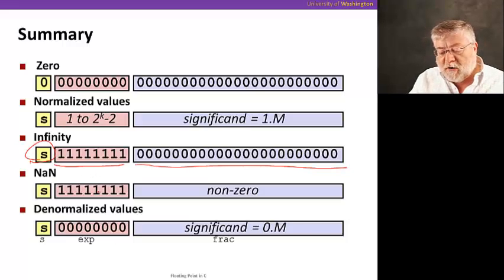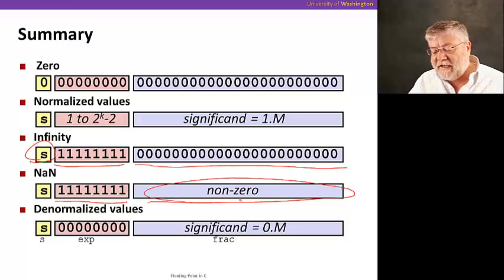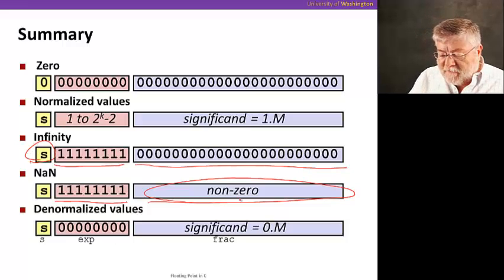For not a number, we actually have many possibilities. The exponent is still all ones, but now the fractional part is non-zero. That gives us many, many values possible for not a number. And in fact, these are used to signify different conditions under which the not a number arose.